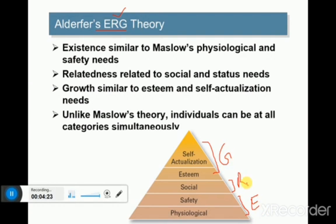Existence is similar to Maslow's physiological and safety needs. Relatedness is similar to Maslow's social and status needs. Growth is similar to Maslow's esteem and self-actualization needs. So Alderfer condensed Maslow's five categories into three categories: Existence, Relatedness, and Growth — which gives the abbreviated ERG theory.